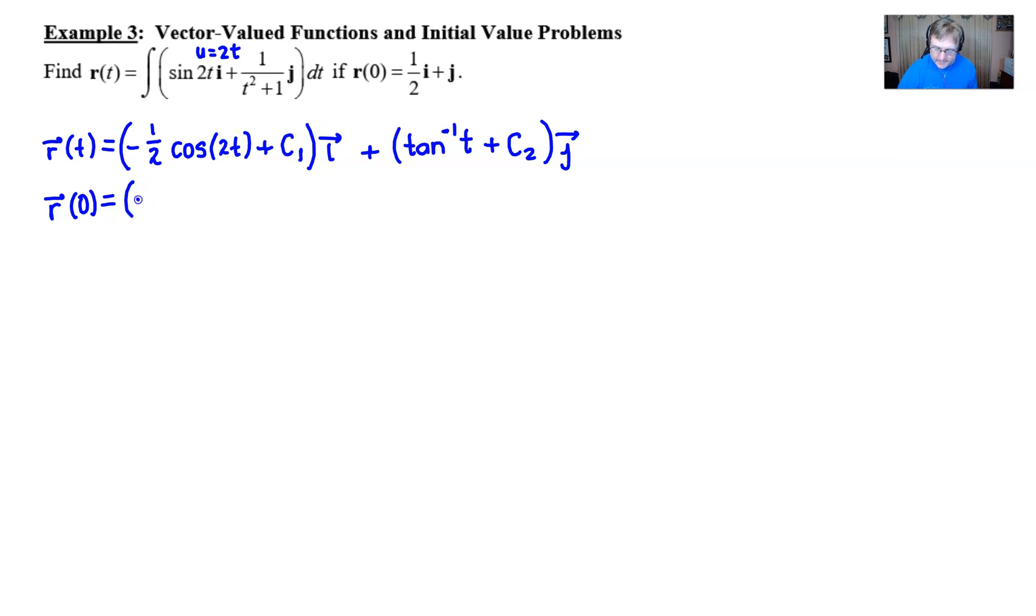So we would have negative 1 half times the cosine of 2 times 0, which I'm going to go ahead and simplify to be 0 there for us, plus your constant c1. And then over here we have the same thing, we have arctan or inverse tan of 0 plus our c2 times our j. And all of this was given to us as 1 half i plus j.